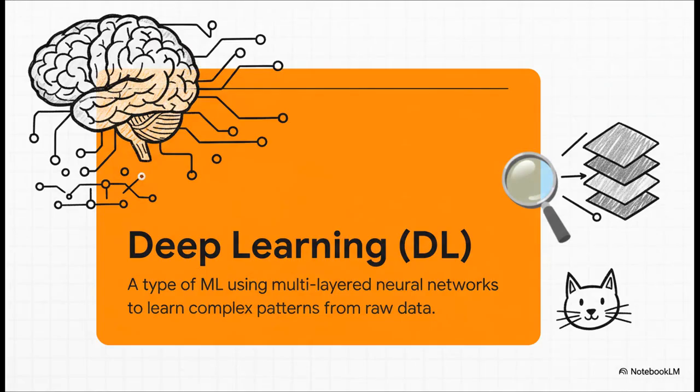And that brings us to deep learning. Now this, this branch of the family tree is a total game-changer. It uses something called neural networks, which are kind of inspired by the layers of neurons in our own brains. This structure lets it learn directly from raw data. No hand-holding required. It can just look at a photo and identify a cat. Not because a person told it to look for whiskers or ears, but because it figured out the patterns of catness all on its own.